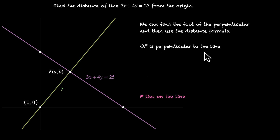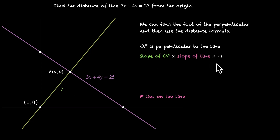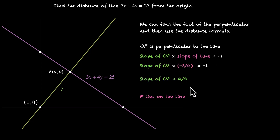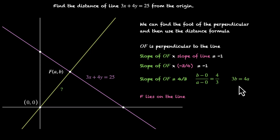OF is perpendicular to the line, which means slope of OF times slope of the line equals minus 1. Slope of the line is minus 3 by 4, which means slope of OF is equal to 4 by 3. Using A and B to get the slope, we have (B minus 0) by (A minus 0) equals 4 by 3, which means 3B equals 4A. That's our first equation.